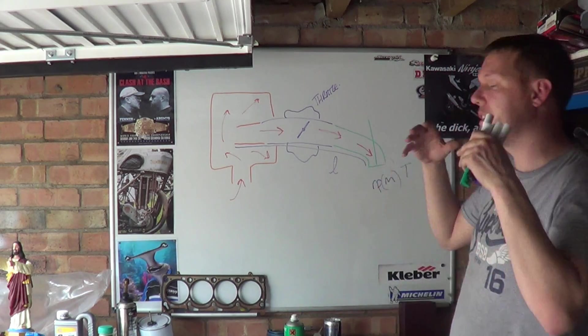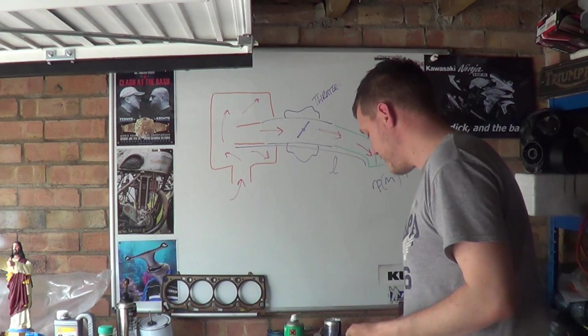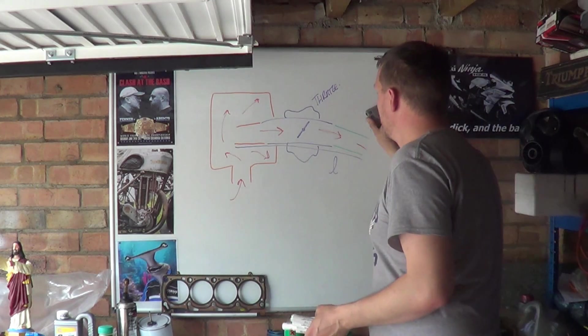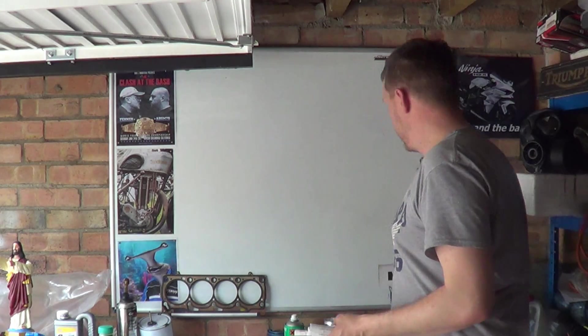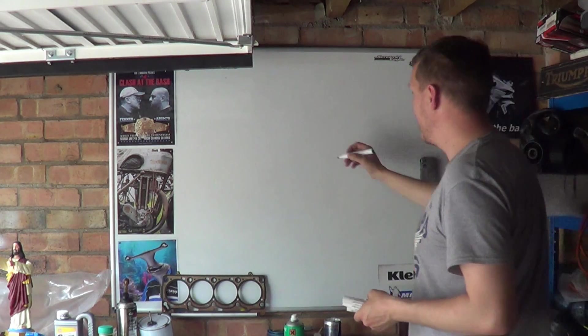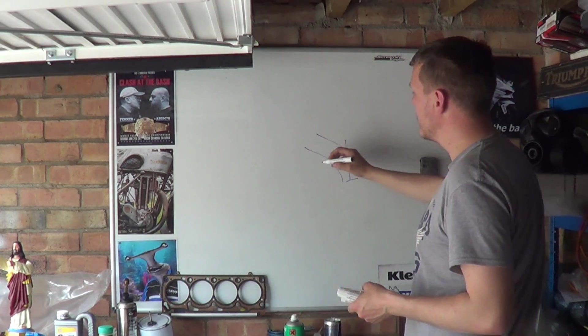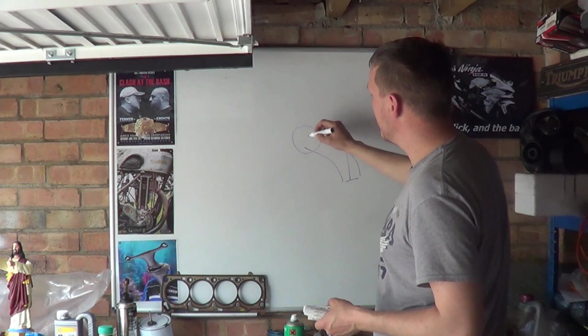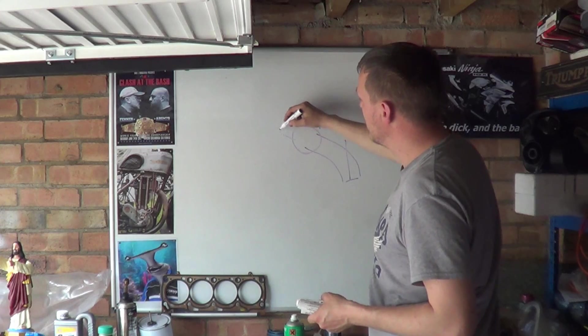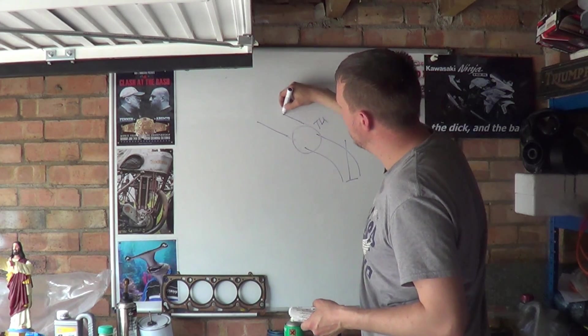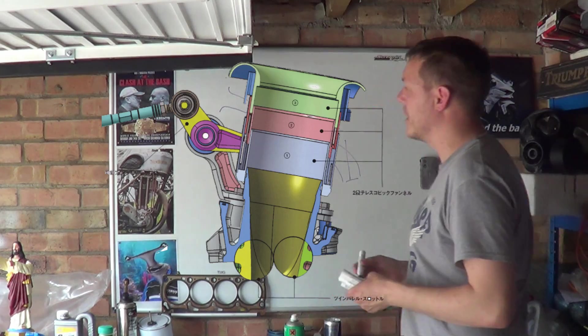One of the things you can do is have a variable inlet tract. Basically a variable inlet tract is you've got your runner into your valve and all that, and then you'll have your throttle body here. And then on your actual runner here you will then have a runner in a runner. Usually has a trumpet on or something like that.